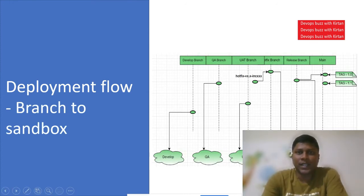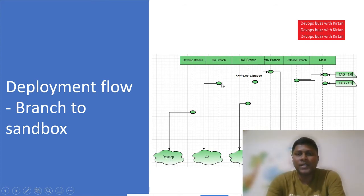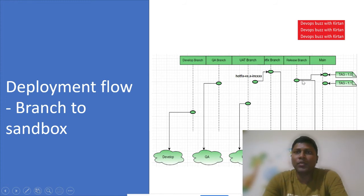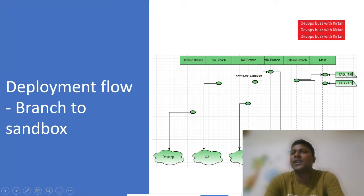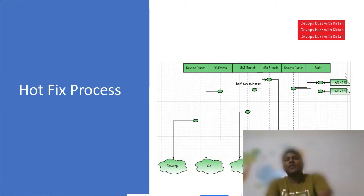In this slide, I've discussed which branch is connected to which sandbox. The develop branch is connected to the developer sandbox, the QA branch is mapped to the QA sandbox, the UAT branch is mapped to the UAT sandbox, and the release branch is mapped to production. The code moves from developer to QA, QA to UAT, UAT to release, and then from the release branch to production. Once the production deployment is successful, the code moves into the main branch and we create a tag.